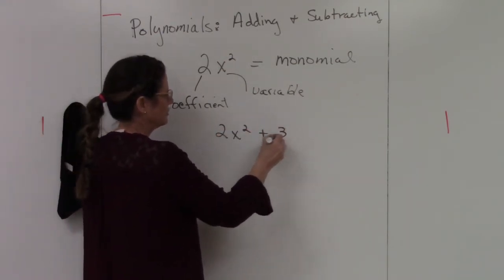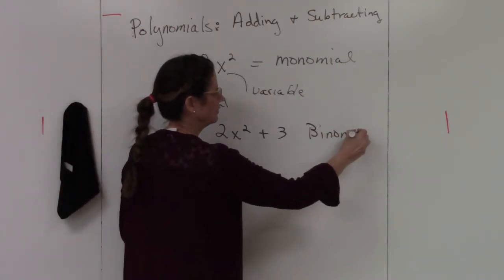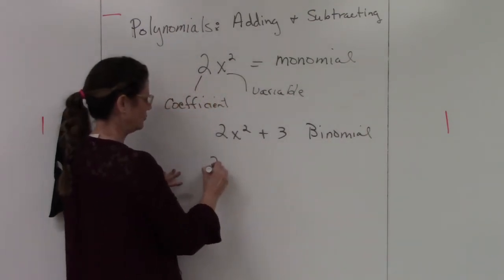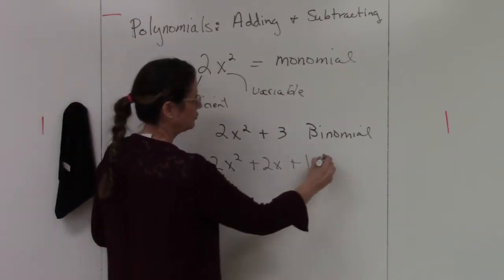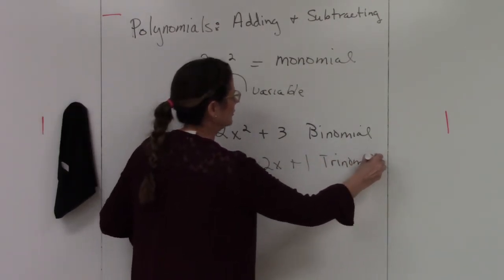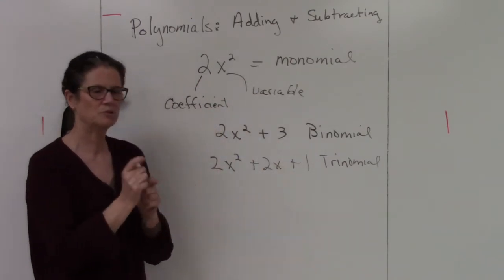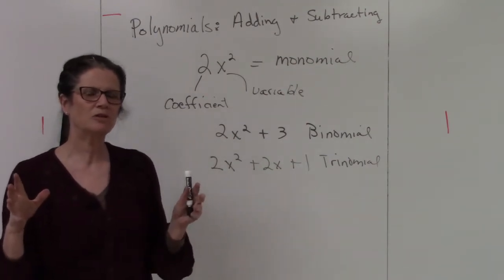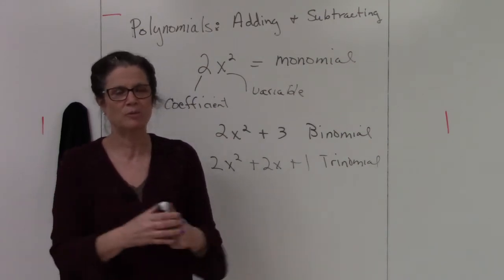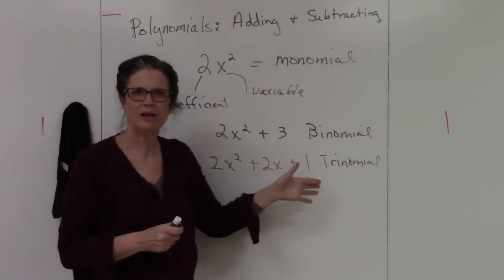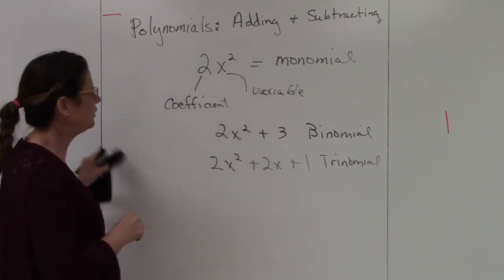When I have two terms, that's called a binomial, and when I have three terms, it's called a trinomial. So: monomial is one term, binomial is two terms, trinomial is three terms. Anything more than three terms — like a four-term or five-term polynomial — you just call it by that name. These are the only three special names.